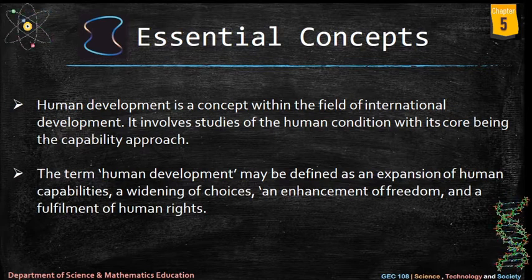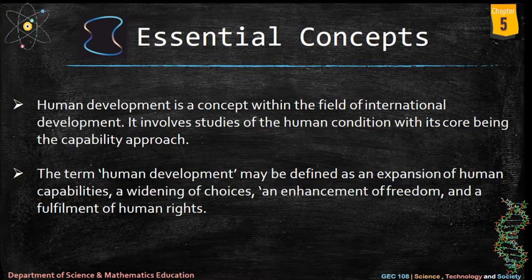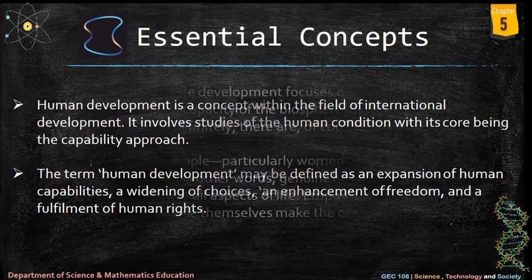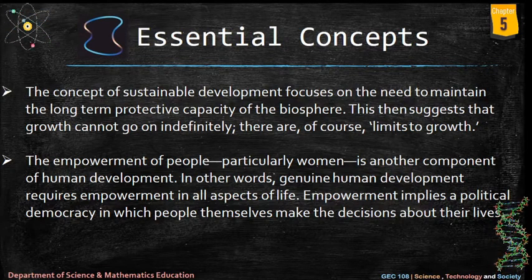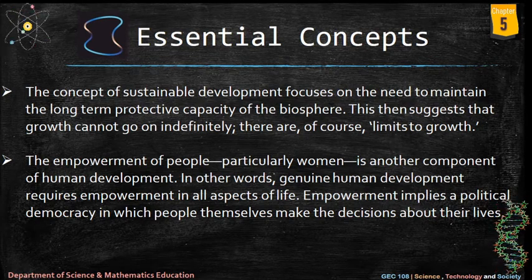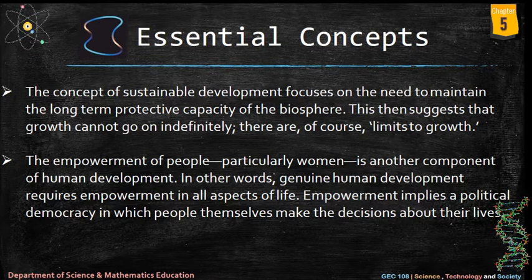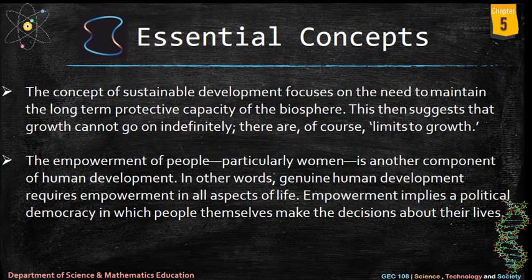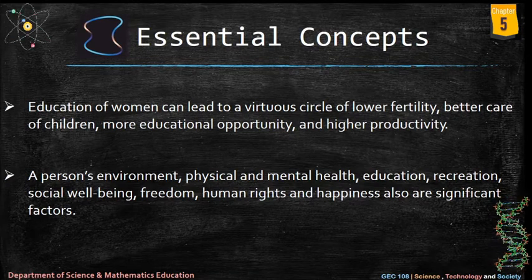Essential concepts: human development is a concept within the field of international development involving studies of the human condition, with its core being the capability approach. Human development may be defined as an expansion of human capabilities, a widening of choices, an enhancement of freedom, and a fulfillment of human rights. Sustainable development focuses on the need to maintain the long-term protective capacity of the biosphere — growth cannot go on indefinitely, there are limits to growth. Empowerment of people, particularly women, is a key component — genuine human development requires empowerment in all aspects of life. Education of women can lead to a virtuous circle of lower fertility, better care of children, more educational opportunity, and higher productivity.